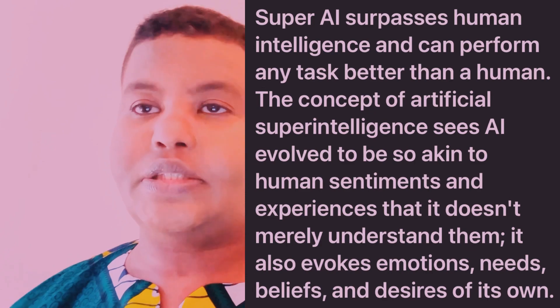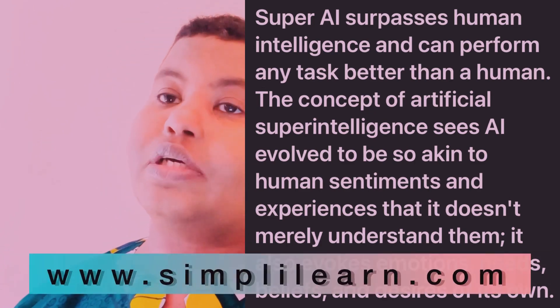KD Nuggets also defines artificial general intelligence: AGI is a form of artificial intelligence that can accomplish any intellectual task that a human being can do. It is more conscious and makes decisions similar to the way humans make decisions.